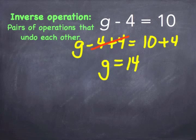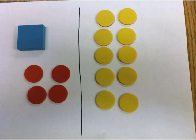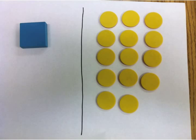Here is the same example with counters. The blue square represents your variable G. Minus four equals the 10. With minus four, it's the red counters and 10 positive, so we use yellow. The solution using the counters would be G equals 14.